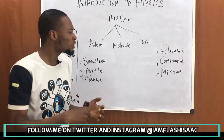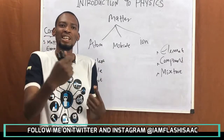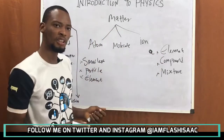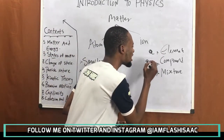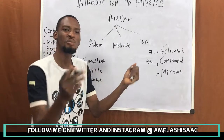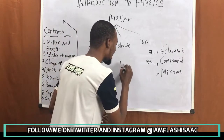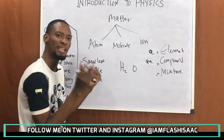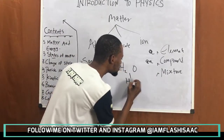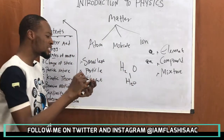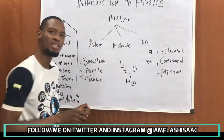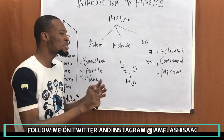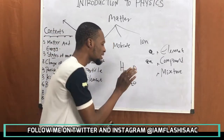A compound contains two or more atoms, or two or more elements, chemically combined together. For example, hydrogen and oxygen, when combined chemically in a reaction, form H₂O — water — which has different properties from either hydrogen or oxygen. In a compound, a new substance is formed whose characteristics are different from each element that makes up the compound.